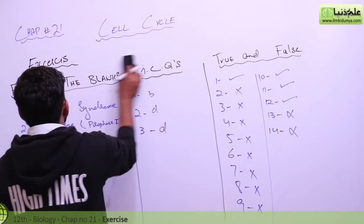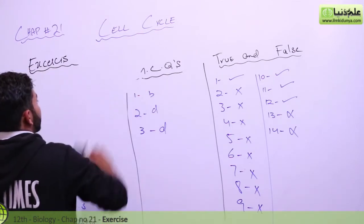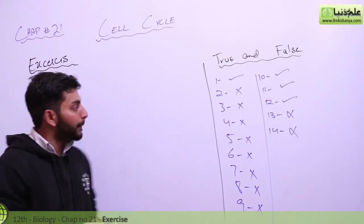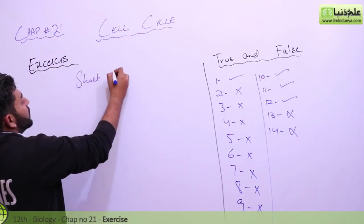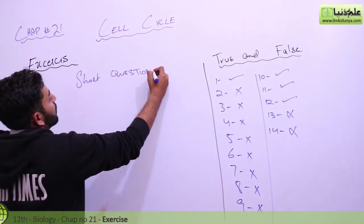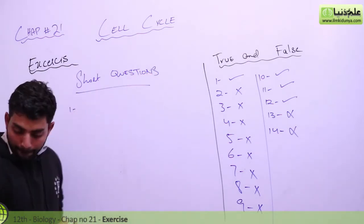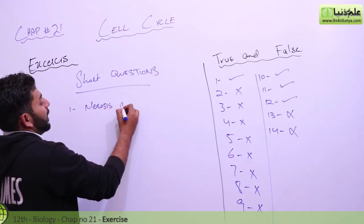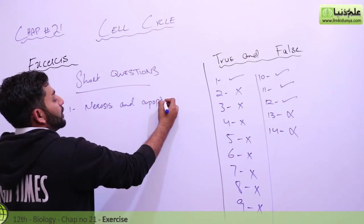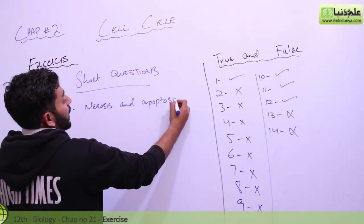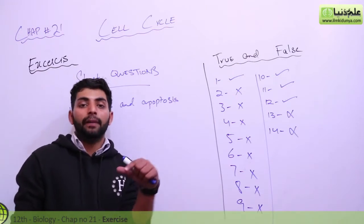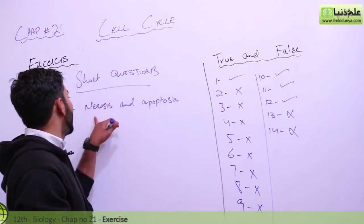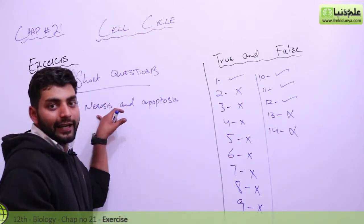Now we move to short questions. First question: what is the difference between necrosis and apoptosis? We have discussed this topic. One is accidental death and the other is programmed cell death. Programmed cell death is apoptosis, and necrosis is accidental cell death.